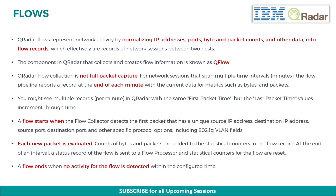A flow starts when the flow collector detects the first packet that has a unique source IP address, destination IP address, source port, destination port, and other specific protocol options, including 802.1Q VLAN fields. Each new packet is evaluated, and counts of bytes and packets are added to the statistical counters in the flow record. At the end of an interval, a status record of the flow is sent to a flow processor and statistical counters for the flow are reset. A flow ends when no activity for the flow is detected within the configured time.